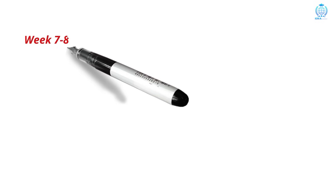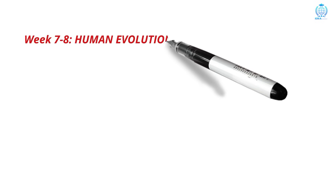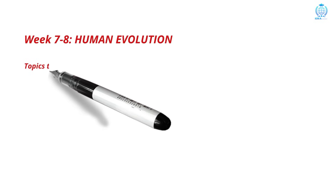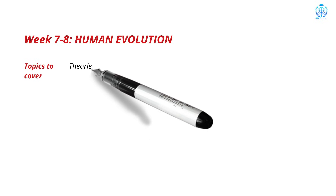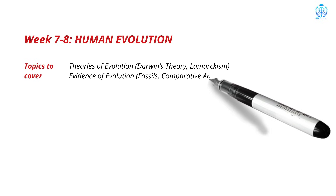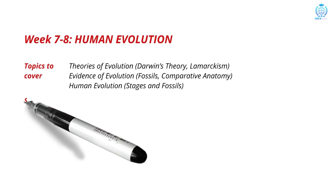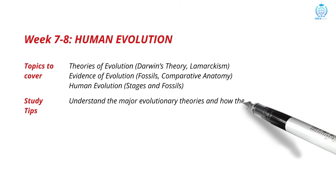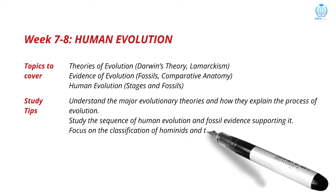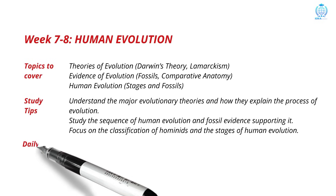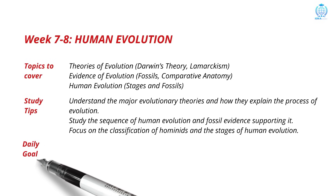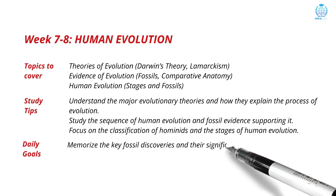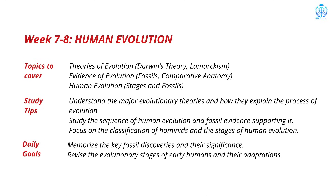Ready to travel back in time? Now comes one of the most interesting parts of biology. For weeks 7 and 8, we will do human evolution. The topics include theories of evolution, evidence of evolution and human evolution. Understand Darwin's and Lamarck's theories thoroughly. Learn how fossils and comparative anatomy prove the story of life on earth. Memorize the sequence of human evolution from early hominids to modern humans. When you realize how far humans have come, you will see that learning biology is also part of the same journey of curiosity.